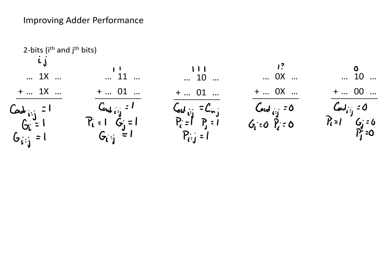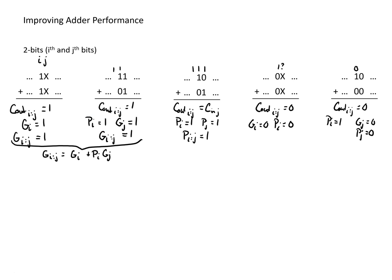To summarize: for the range i through j as a whole, we generate a carry if either the most significant bit generates a carry, or the most significant bit propagates a carry and the least significant bit generates a carry. We propagate a carry if both the i-th position and the j-th position are propagating a carry.